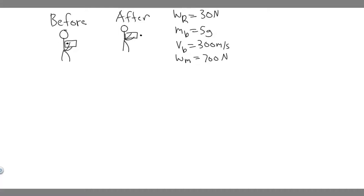In this problem, we're told a rifle with a weight of 30 newtons fires a 5-gram bullet with a speed of 3 times 10 to the 2 meters per second. Part A: find the recoil speed of the rifle. Part B: if a 7 times 10 to the 2 newton man holds the rifle firmly against his shoulder, find the recoil speed of the man and the rifle.